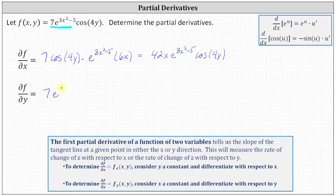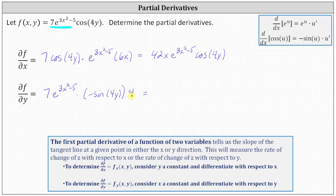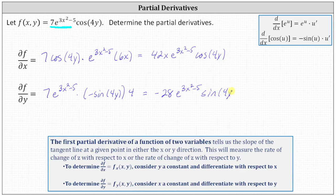The partial of f with respect to y is equal to seven times e to the power of the quantity three x squared minus five times the derivative of cosine four y with respect to y, which is negative sine four y, times the derivative of four y with respect to y, which is four. Simplifying, seven times four is 28, and we also have a negative. So the partial of f with respect to y equals negative 28 times e to the power of the quantity three x squared minus five times sine four y.